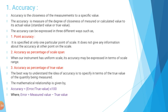The first parameter is accuracy. Accuracy is the closeness of measurements to a specific value. It is the measure of the degree of closeness of a measured or calculated value to its actual value — that is, the standard value or true value. Accuracy can be expressed in three different ways: point accuracy, accuracy as a percentage of scale span, and accuracy as a percentage of true value.